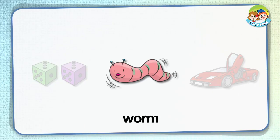Worm: a worm has a long, thin body. It doesn't have bones or legs. The picture shows a worm.